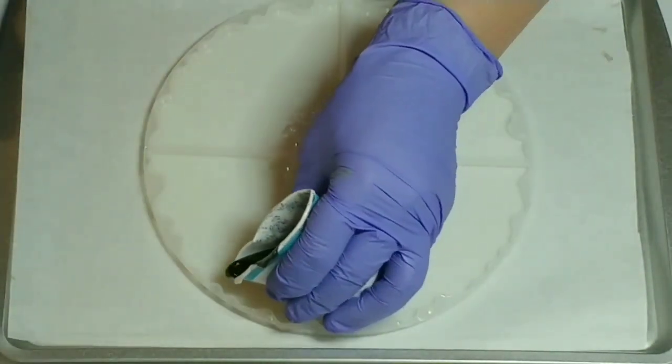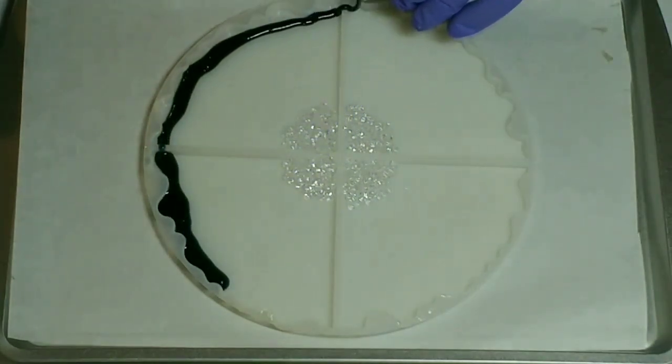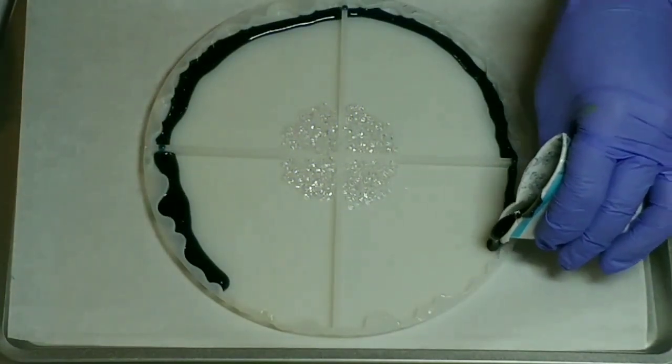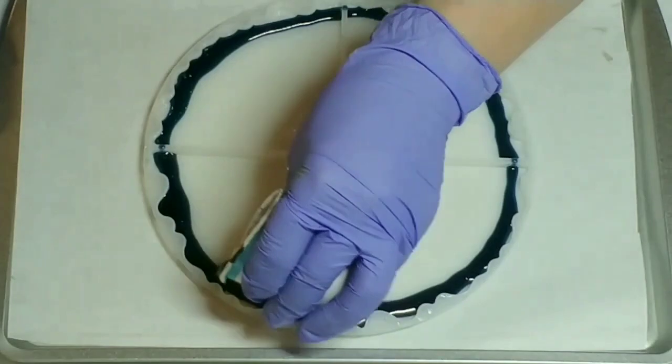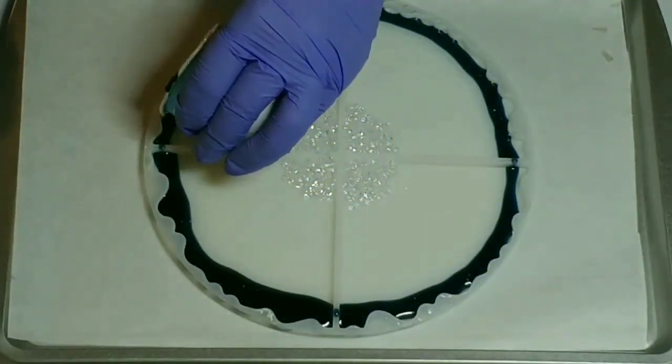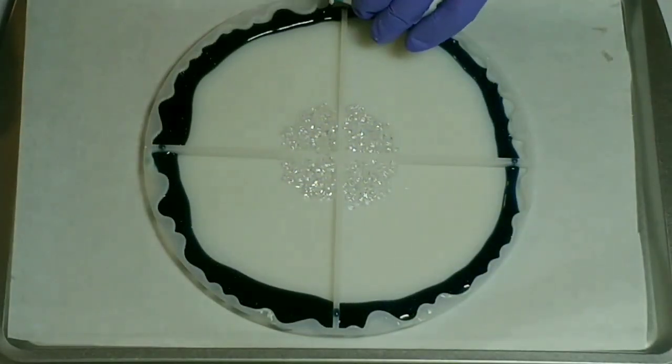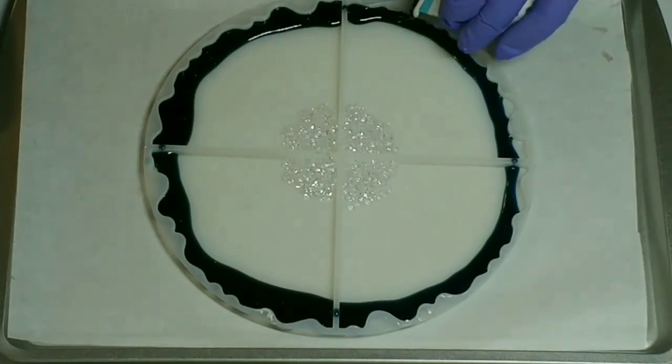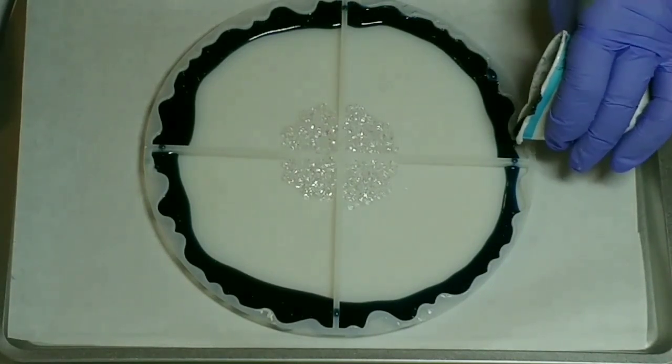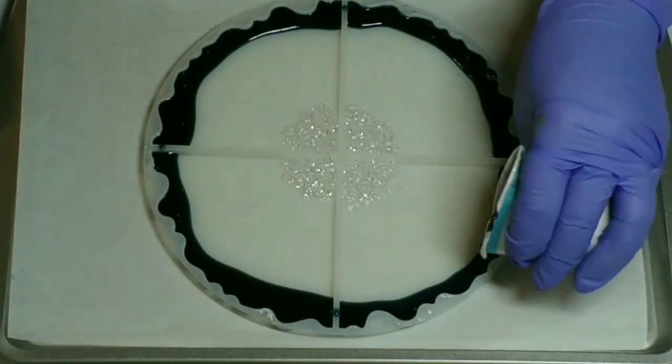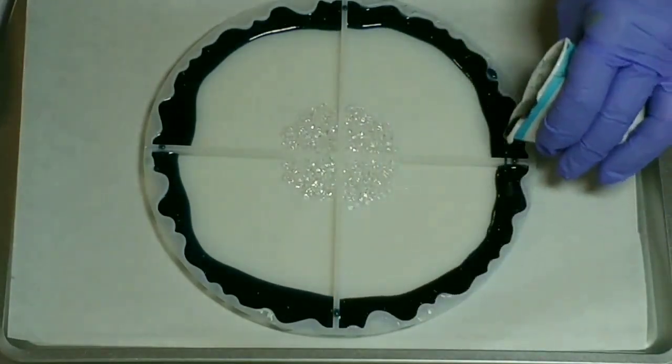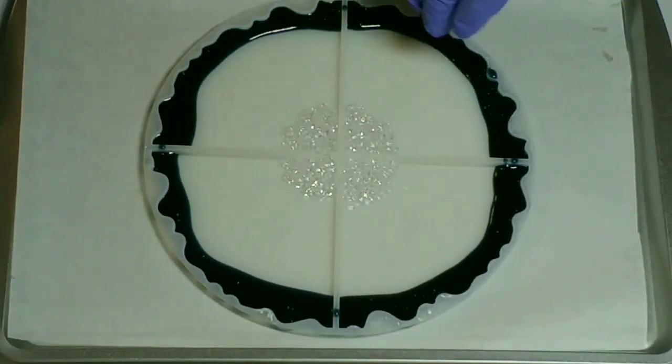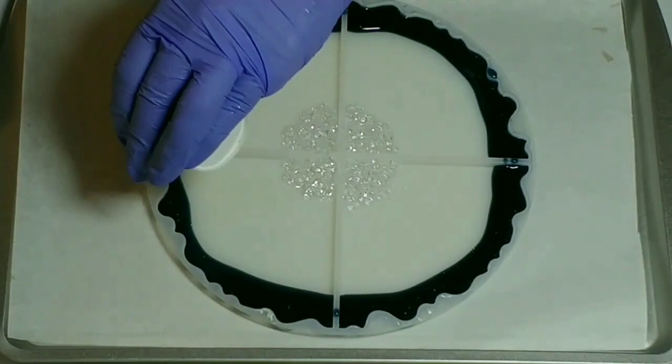And we're going to take the blue and drizzle it around the parameter of the mold. I'm actually using the entire cup, and it's not a lot, it's just a little bit that I mixed because I knew that I only need just enough for the edging.